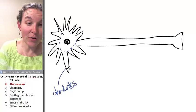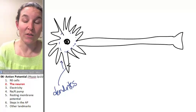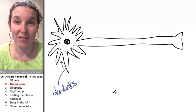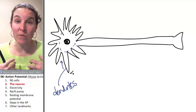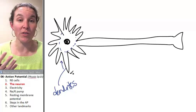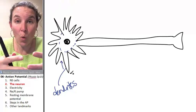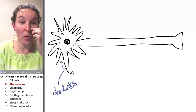And dendrites are defined by the information direction that information travels. So dendrites receive information from the environment or from another cell and take it toward the nucleus or toward the cell body.